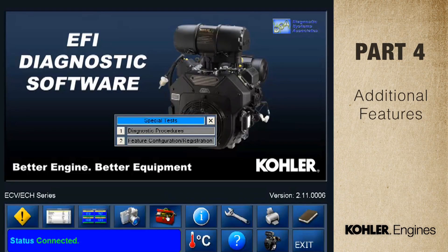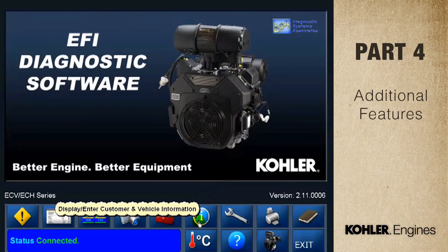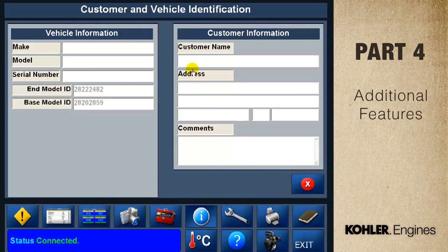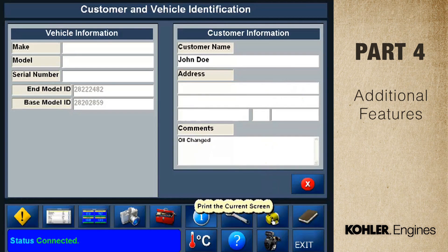The other option, the feature configuration registration, shows the software license ID number. Now we'll look at the customer vehicle information screen. This screen lets you enter information about the vehicle and owner and print it for your customer files. To capture the information, print the screen — otherwise the information will disappear.